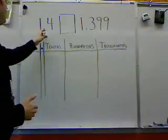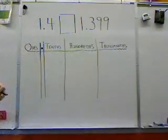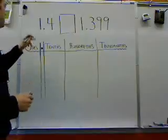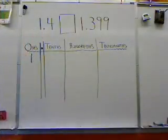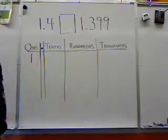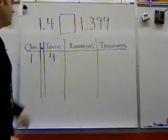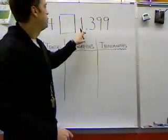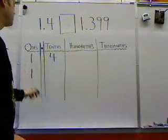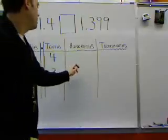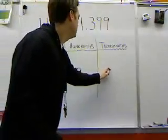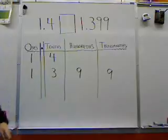What we can remember is that anything to the left side of the decimal is a whole number. In this case for this number we have 1 whole number and then beyond that we have 4 tenths. Now in this number here we've got 1 whole number and we've got 3 tenths and then we've got 9 hundredths and another 9 in the thousandths column.